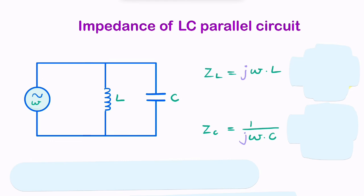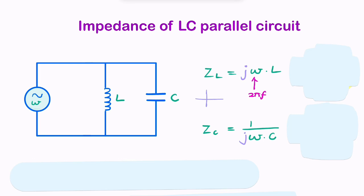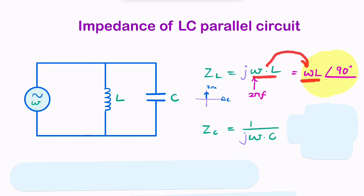For an inductor, the impedance is simply jωL, where ω is 2πf and f is the frequency of your AC signal. Because this is complex and imaginary, we can convert it into polar form. On the complex plane with a real axis and imaginary axis, jωL lies on the positive imaginary axis, so we can write it as ωL with an angle of 90 degrees.